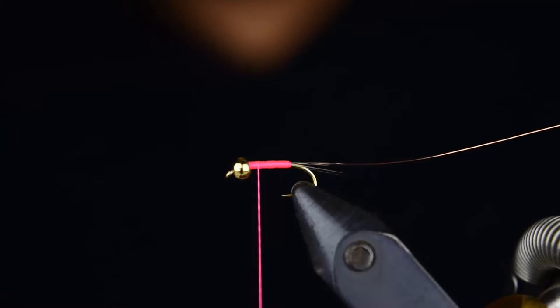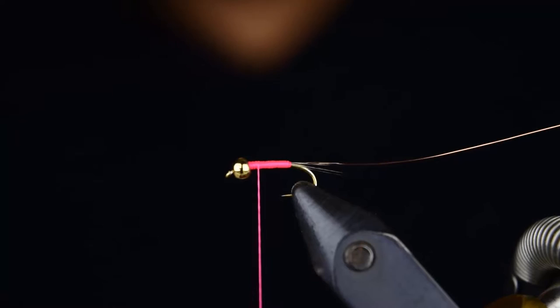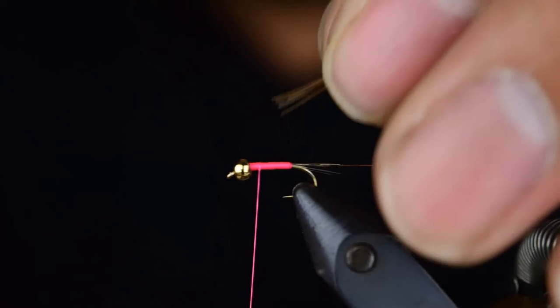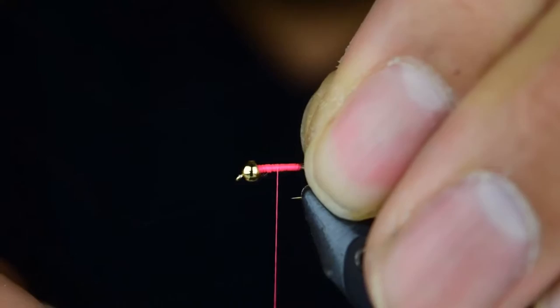Then you're going to take your pheasant tail. We're going to cut off about five or six fibers from the pheasant tail here for a size 18. Cut off the brittle tips and we're going to go ahead and tie these in on our side of the hook. Then we're going to wrap back.